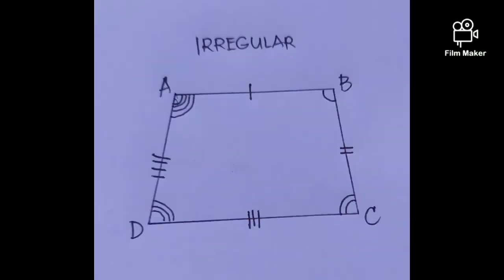While in an irregular quadrilateral, one or more sides are unequal, and one or more angles are unequal.